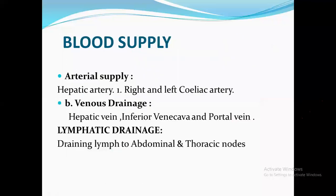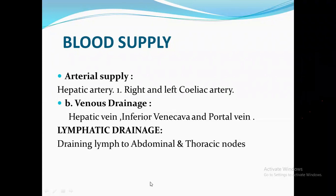The blood supply of the liver: arterial supply is via the hepatic artery — the right and left branches of the celiac artery — which carries oxygenated blood from the heart to the liver. Venous drainage is via the hepatic vein, inferior vena cava, and portal vein, which carry deoxygenated blood from the liver to the heart. Lymphatic drainage goes to abdominal and thoracic nodes.